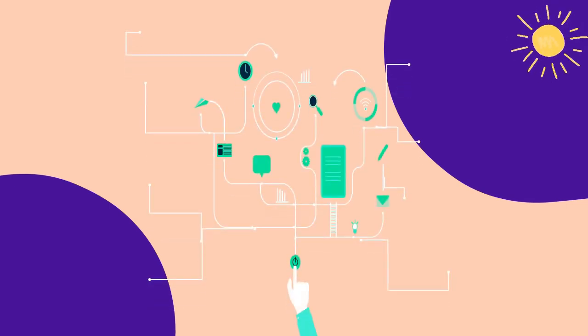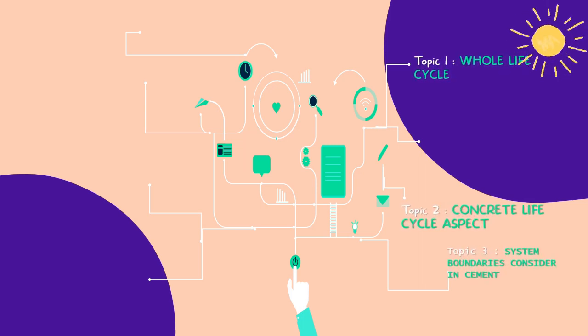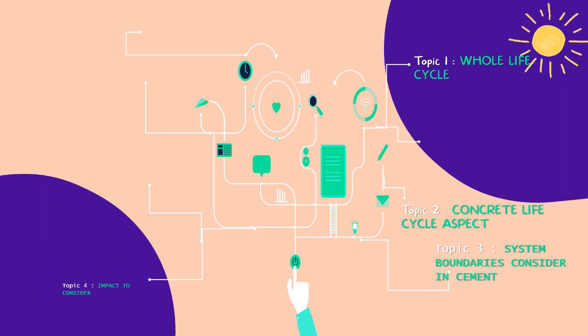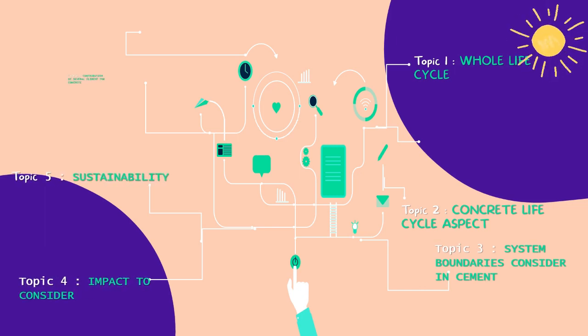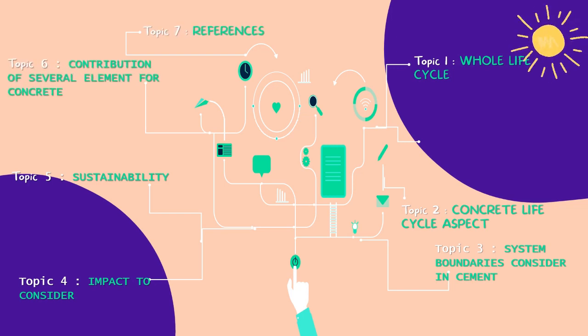Now we know the history of cement, let's see what we will learn in this video. Topic 1 about whole life cycle. Topic 2 about concrete life cycle aspects. Topic 3 about system boundaries considered in cement. Topic 4 about impact to consider. Topic 5 about sustainability. Topic 6 about contribution of several elements for concrete. And Topic 7 references.